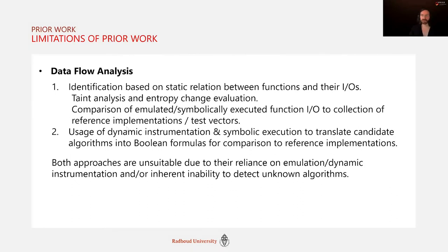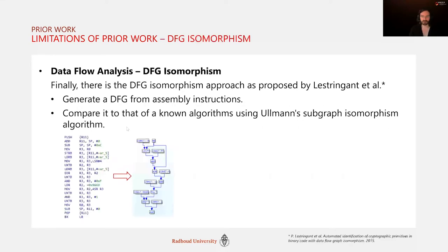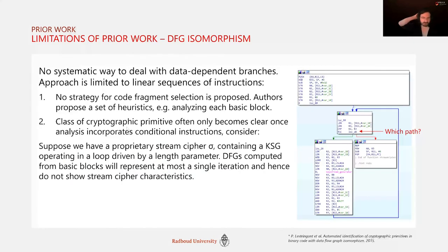In the area of data flow analysis, one approach identifies crypto routines by their static relation between functions and their inputs and outputs through a combination of taint analysis and entropic change evaluation. Another approach uses dynamic instrumentation and symbolic execution to extract boolean formulas for comparison to reference implementations. Then there's data flow graph isomorphism, most recently proposed by Lestrignan et al., which generates a data flow graph and compares it to those of known algorithms using Ullmann's subgraph isomorphism algorithm. We consider it the strongest among existing prior work.